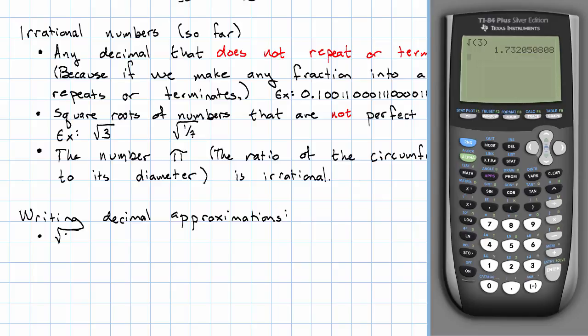We could write the square root of three exactly equals 1.73205080. I'm going to leave off that last digit because I don't know if it's rounded up or not. And then I'm going to write three dots. This is a punctuation mark, these three dots. This is an ellipsis.